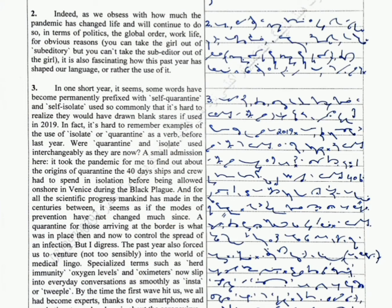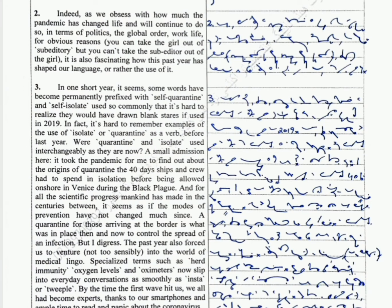In one short year, it seems, some words have become permanently prefixed with 'self-' - quarantine and self-isolate used so commonly that it's hard to realize they would have drawn blank stares if used in 2019. In fact, it's hard to remember examples of the use of 'isolate' or 'quarantine' as a verb before last year.